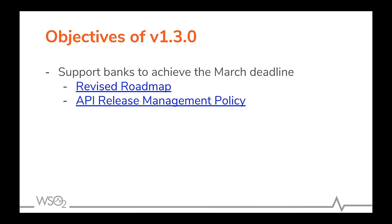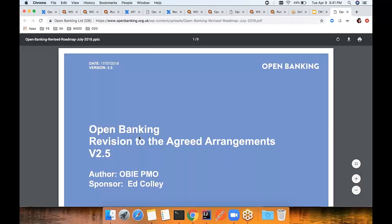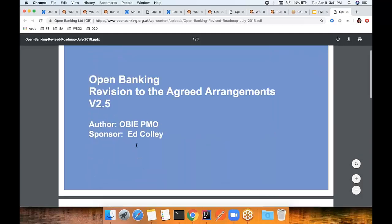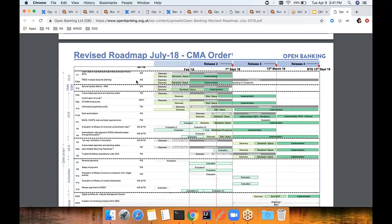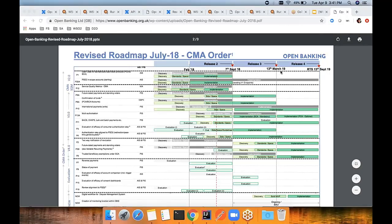Very recently, we did the WS2 Open Banking Solution version 1.3.0. Our main objective was to support banks to achieve the March deadline — that is to have the sandbox environment ready for the TPPs to start testing. If you go to this revised roadmap, it clearly explains what APIs and services banks need to expose for each deadline.